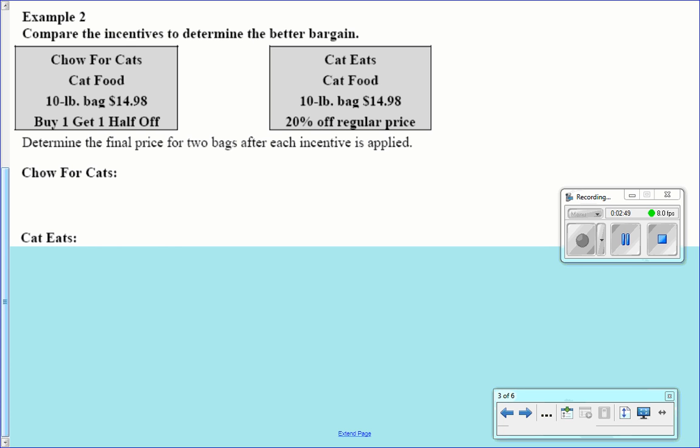All right. So we have Chow For Cats cat food. It's a 10-pound bag, $14.98. It's buy one, get one half off. And then over here we have Cat Eats cat food. It's another 10-pound bag. They both cost $14.98, but this one is 20% off the regular price.